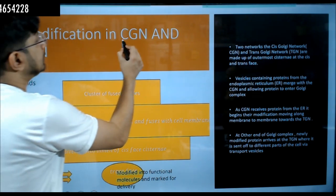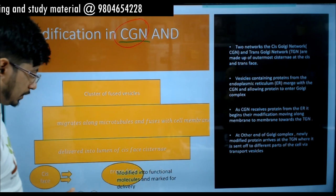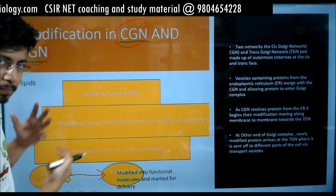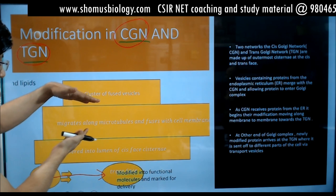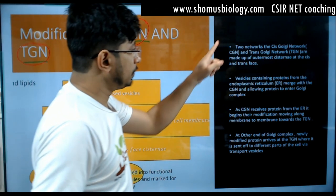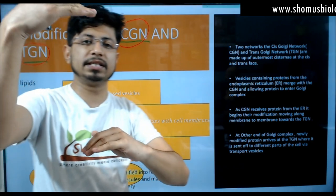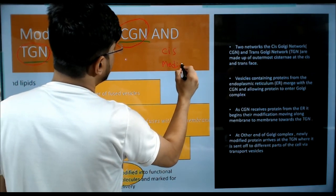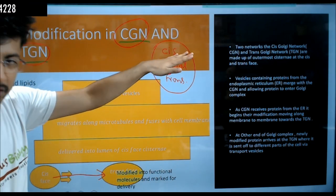The Golgi has distinct regional networks: the CGN (cis-Golgi network) and TGN (trans-Golgi network). There is a journey of vesicles from cis-Golgi towards the trans-Golgi. The cis-Golgi is the incoming end with primary vesicles, and the trans-Golgi is the outgoing shipping end with secondary vesicles. This whole structure of cis, medial, and trans is known as the Golgi network — cis-Golgi network, medial-Golgi network, and trans-Golgi network.